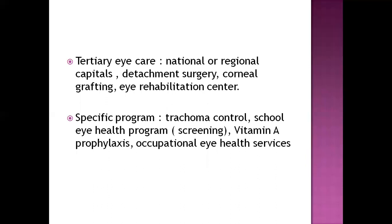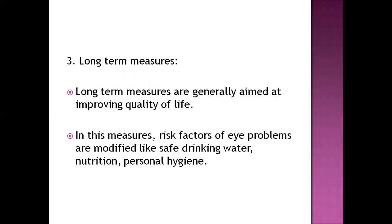Specific programs address one aspect of health or one age group. These include trachoma control, school eye health program — since eye diseases can start from school age, making school screening important — vitamin A prophylaxis as a critical nutrient to manage blindness, and occupational eye services. Occupational eye services include six-monthly or monthly checkup, emergency follow-up, regular follow-up, and vitamin A distribution.